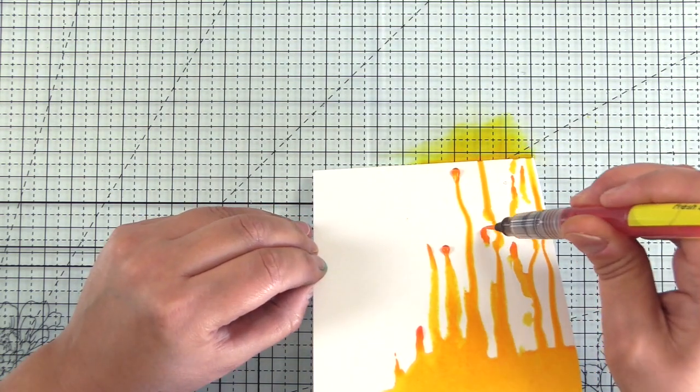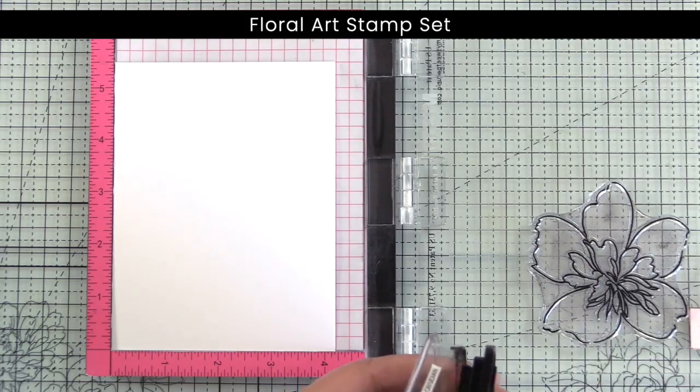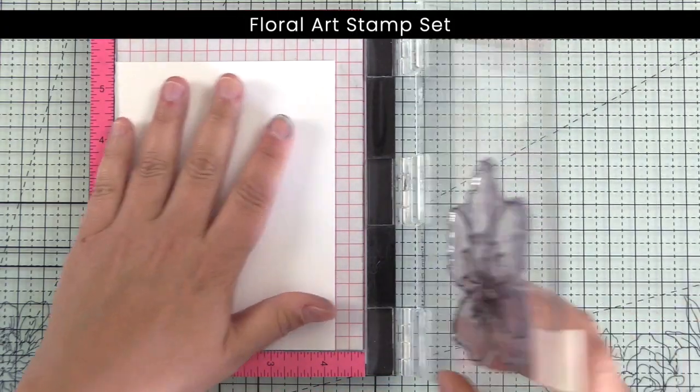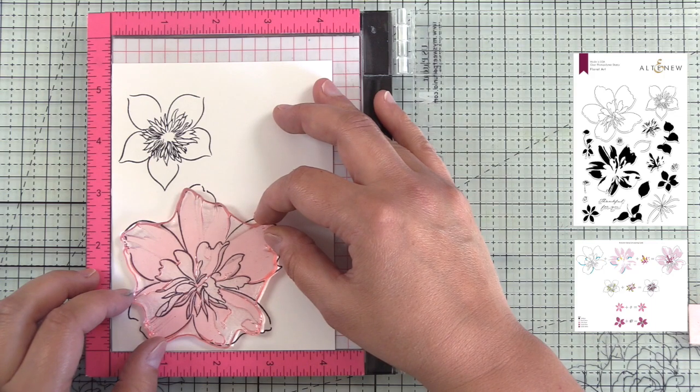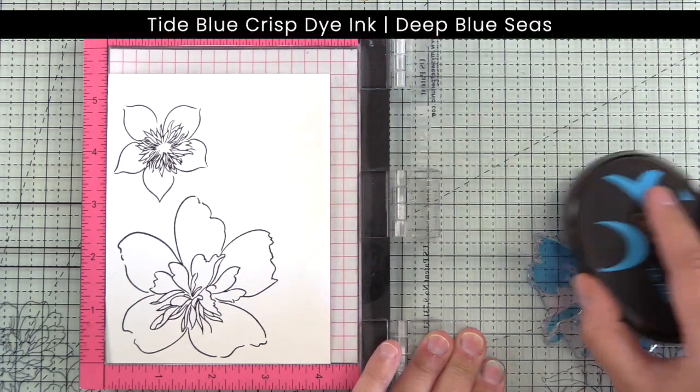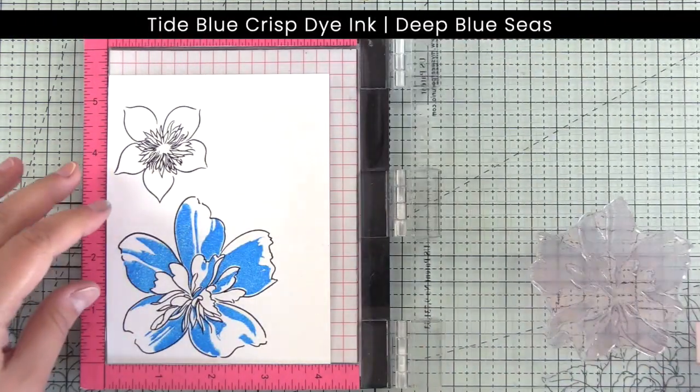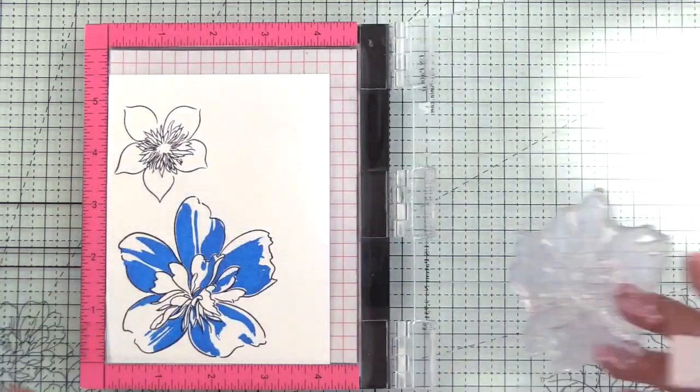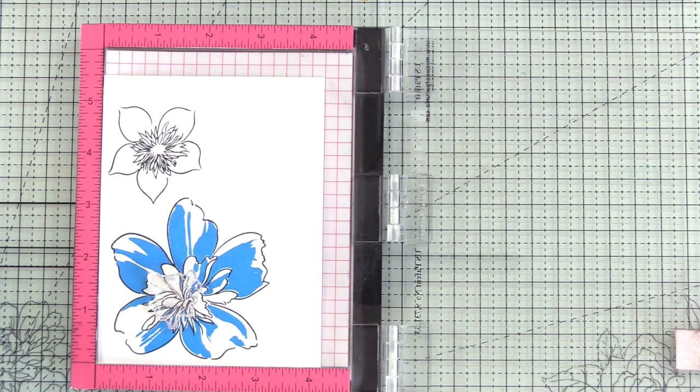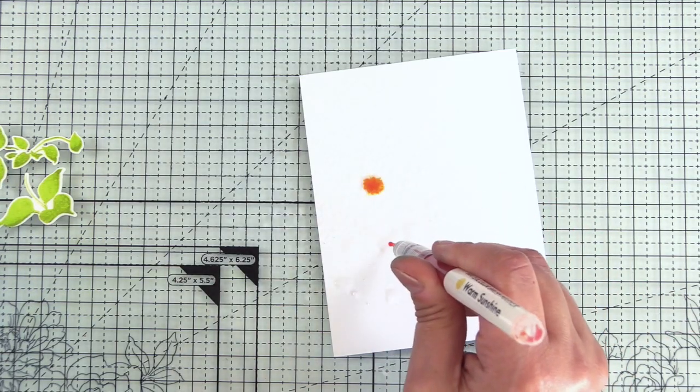For the second card I'll use the Floral Art stamp set, stamping the outline layer in obsidian pigment ink, the second layer in tide blue crisp ink, and I did stamp it twice because the first one was just a little bit blotchy. I'm stamping on Neenah classic crest solar white for this one, and for the center I used fresh lemon.